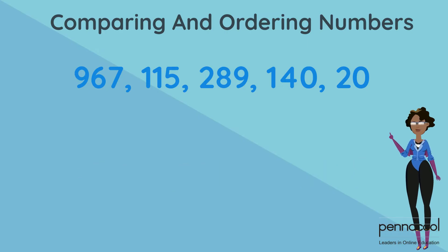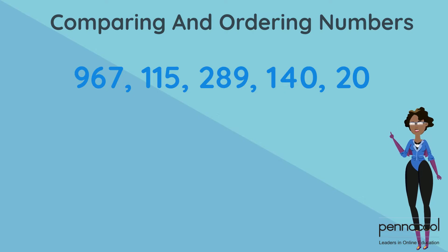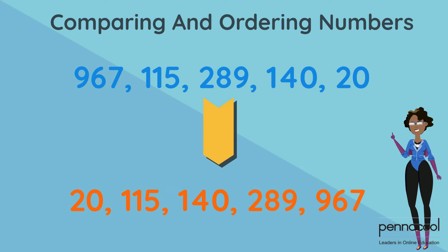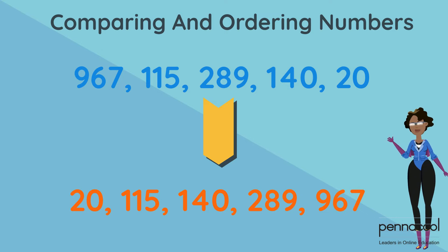We went from 967, 115, 289, 140 and 20 to ascending order starting with our smallest: 20, 115, 140, 289 and then 967.